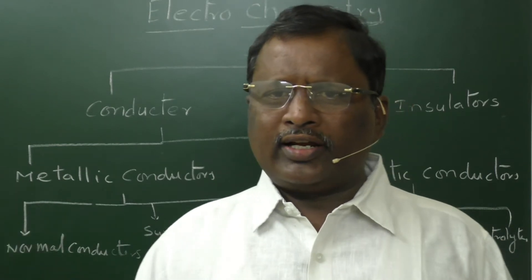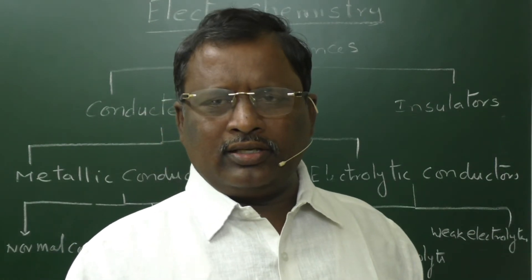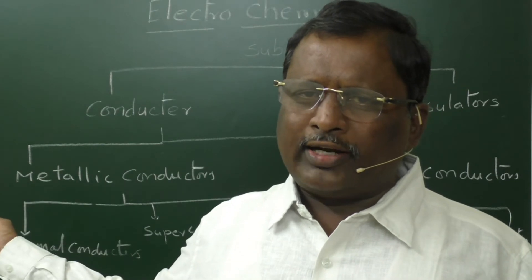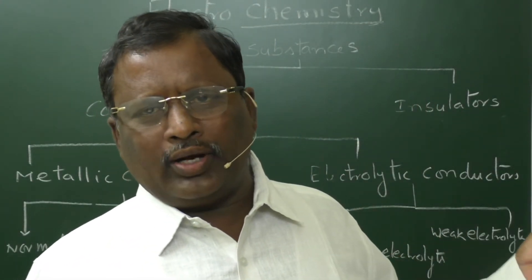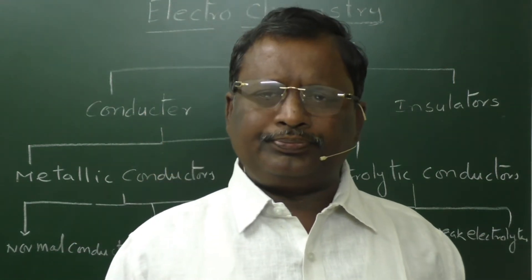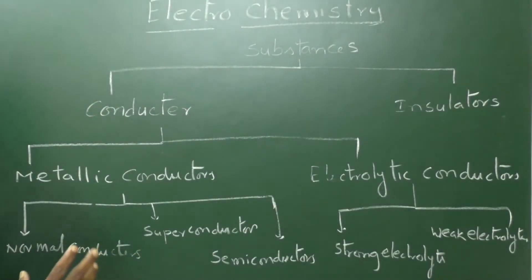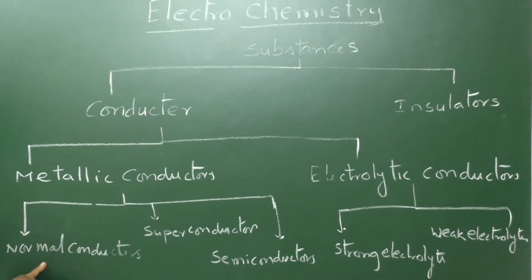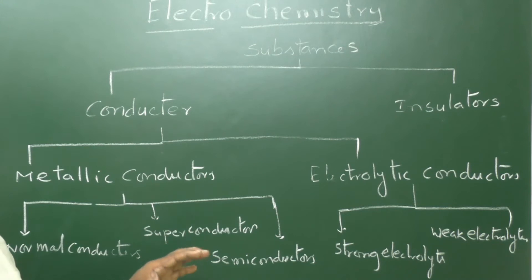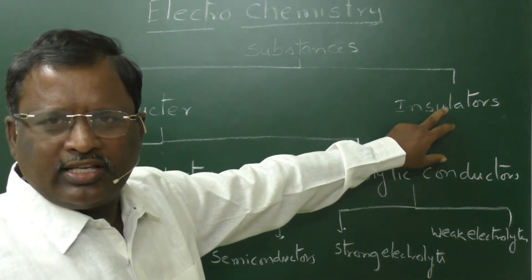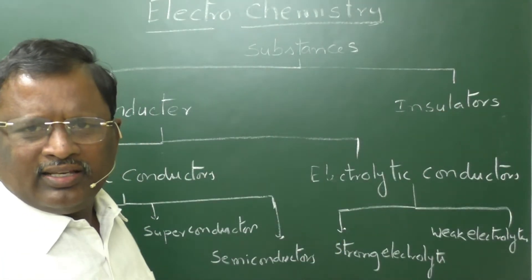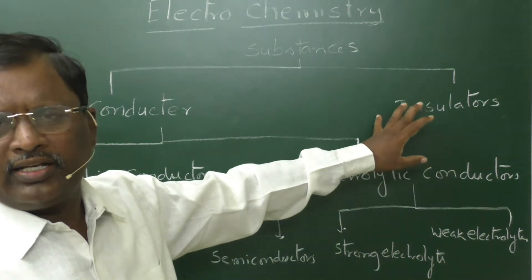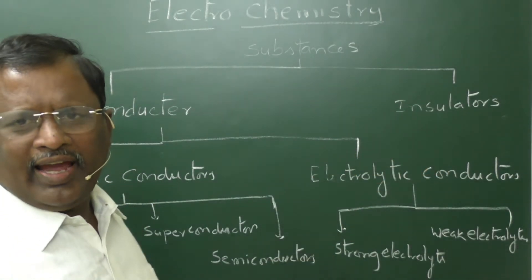In metallic conductors the conductance is through electrons — that is why they are called electronic conductors. In electrolytic conductors the conductance is due to ions — that is why they are called ionic conductors. Again, metallic conductors can be divided into normal conductors and superconductors, basing on the magnitude of charge they allow to pass. Some insulators, due to crystal defects, will act as semiconductors — do not be confused by that.